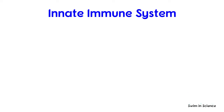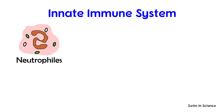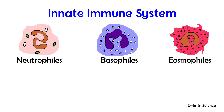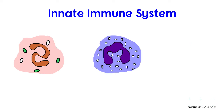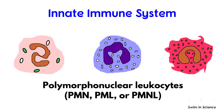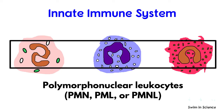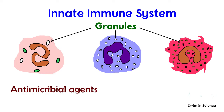The innate immune system comprises mostly cells from myeloid progenitors. They are neutrophils, basophils, eosinophils, monocytes, and mast cells. Neutrophils, basophils, and eosinophils are also called polymorphonuclear leukocytes because of the varying shape of the nucleus, which is usually lobed into segments. They are characterized by the presence of specific granules in their cytoplasm, which contains a combination of chemicals such as antimicrobial agents and hydrolytic enzymes.